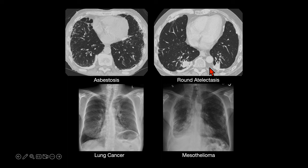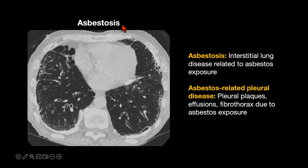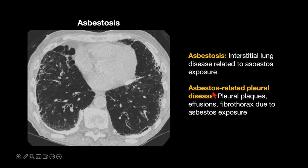If you do have a patient with a history of asbestos exposure or you see a patient with calcified pleural plaques, there are a few things that you have to keep in mind. The first is asbestosis — the interstitial lung disease related to asbestos exposure. It's important to note that you don't have to have pleural plaques to have asbestosis; it can happen in isolation. Asbestosis is what happens in the lungs, whereas asbestos-related pleural disease is what you get in the pleural space.